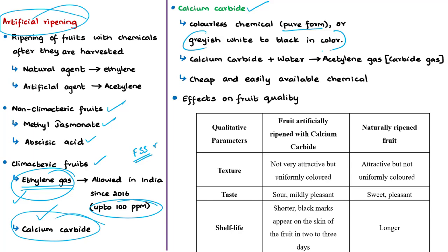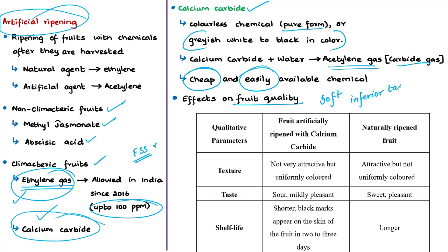Calcium carbide is often used by fruit dealers because it is cheap and easily available in the market. However, it has negative effects on fruit quality. Fruits ripened with calcium carbide are overly soft and inferior in taste and flavor. They also have a shorter shelf life — the period during which food retains acceptable quality from a safety and organoleptic point of view. A fruit ripened with calcium carbide may develop uniform surface color, but the tissue inside may not be ripe — it may remain green or raw.